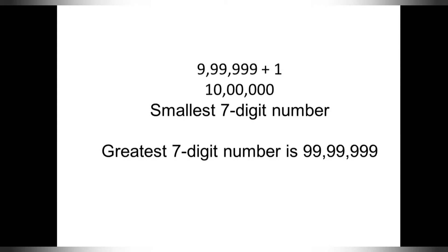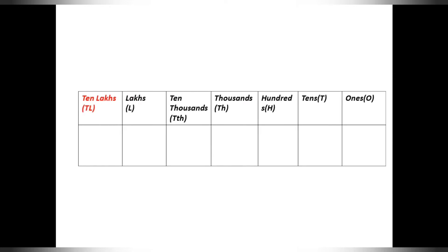We know the place values for 6-digit numbers: 1s, 10s, 100s, 1000s, 10,000s, and lakhs. Now, for a 7-digit number, the place value is extended. Here is the place value chart: 1s, 10s, 100s, 1000s, 10,000s, lakhs — and we are now introduced to the 7th digit, which is the 10 lakhs place.